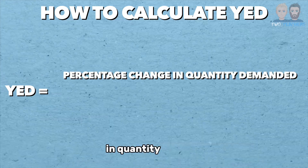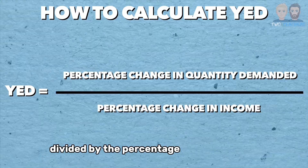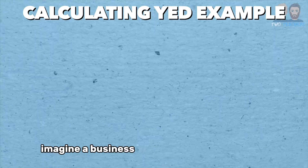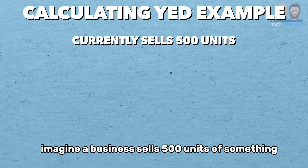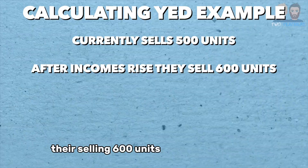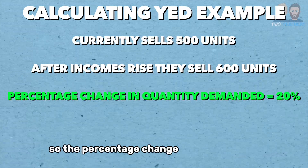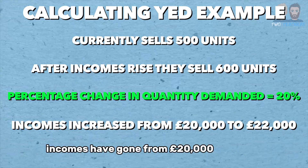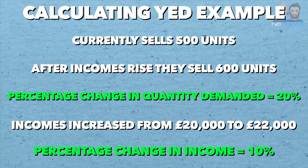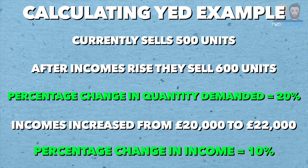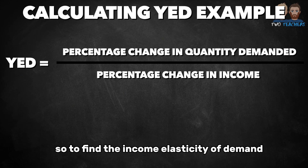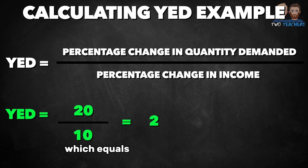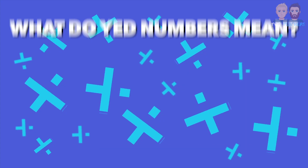YED equals the percentage change in quantity demanded divided by the percentage change in income. Let's run through an example. Imagine a business sells 500 units; after incomes go up, they're selling 600 units — a 20% change in quantity. Over that period incomes went from £20,000 to £22,000, a 10% change. So the income elasticity of demand is 20 divided by 10, which equals 2 — a YED of 2.